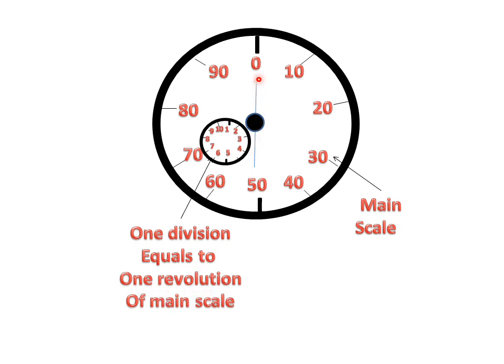When this pointer moves a complete revolution, then this short indicator will show the 1 reading. When it gives completely 2 revolutions, then it will give 2 readings. So for 1 complete revolution of the main scale, it will give 1 reading.